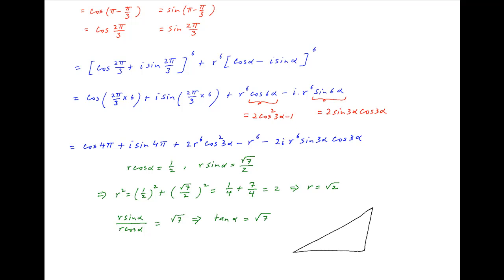Consider a right-angle triangle with the angle between the base and the hypotenuse being equal to alpha. Since tan alpha is equal to root 7, the perpendicular is equal to root 7 and the base is equal to 1. Using Pythagoras' theorem, the hypotenuse is equal to root of 7 plus 1, which is equal to 2 root 2. Therefore sin alpha equals root 7 upon 2 root 2, and cos alpha equals 1 upon 2 root 2.